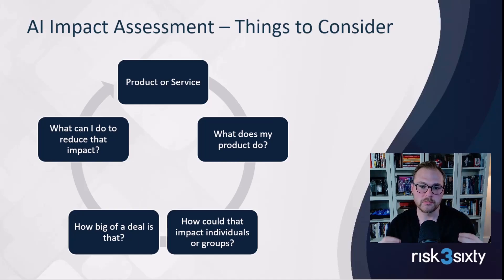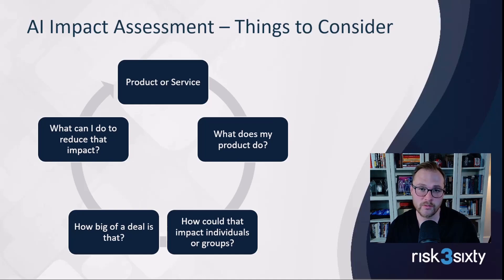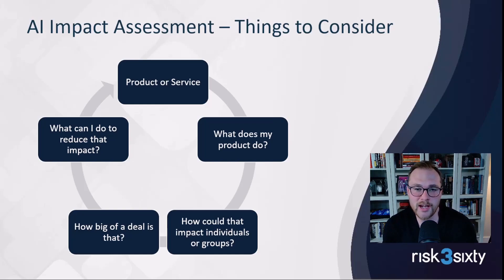You think about what is the product or service that you have, and then based on that product or service that leverages AI, what does it do? Once you define what it does, you can ask: how could that potentially impact individuals or groups in a negative way? Then you decide how significant that impact is — how likely it is — and if it is a high impact, it needs to be addressed.